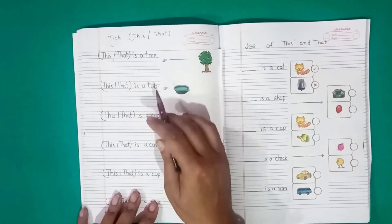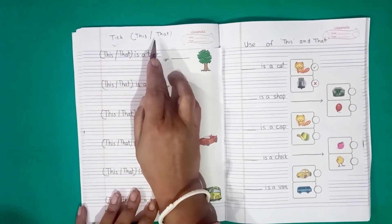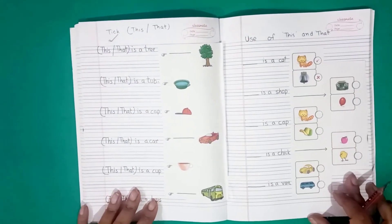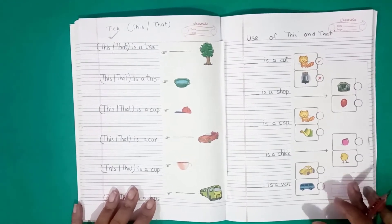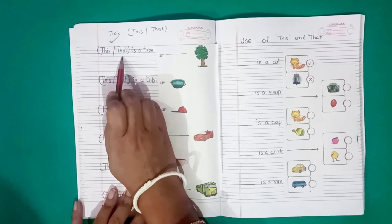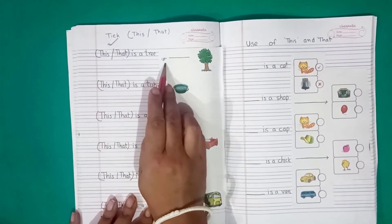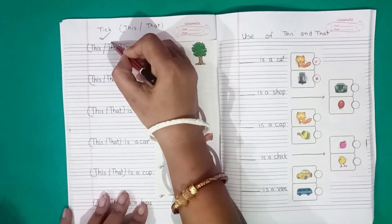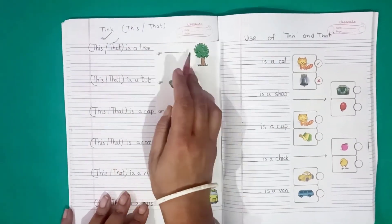One is it. Take this or that. See here. Both the things are here. This or that. See here. The tree is far. So, in this picture, you will take that. That is a tree.